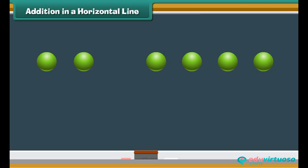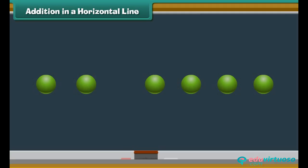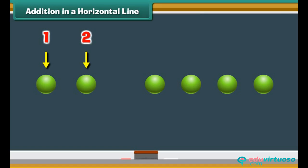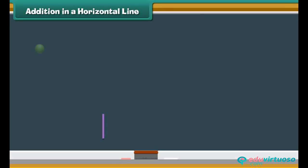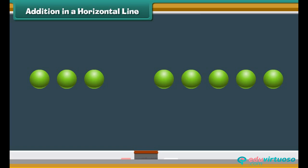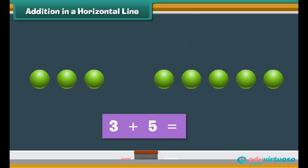Addition in a horizontal line. Let us now use dots to add numbers horizontally. Look at the screen. There are two dots on the left and four dots on the right. What is 2 plus 4? Count the total number of dots: 1, 2, 3, 4, 5, 6. Therefore, 2 plus 4 is 6. What is 3 plus 5? Count the dots: 1, 2, 3, 4, 5, 6, 7, 8. 3 plus 5 is 8.